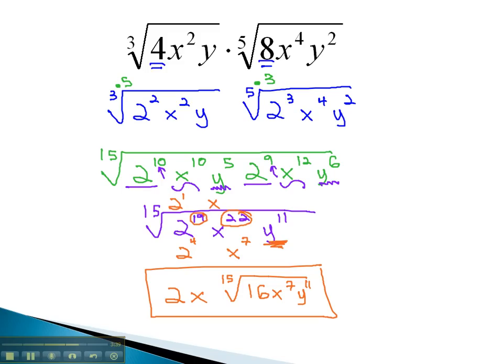We can multiply radicals of mixed index by getting a common index, multiplying the index and the exponents by the same thing, and simplifying.